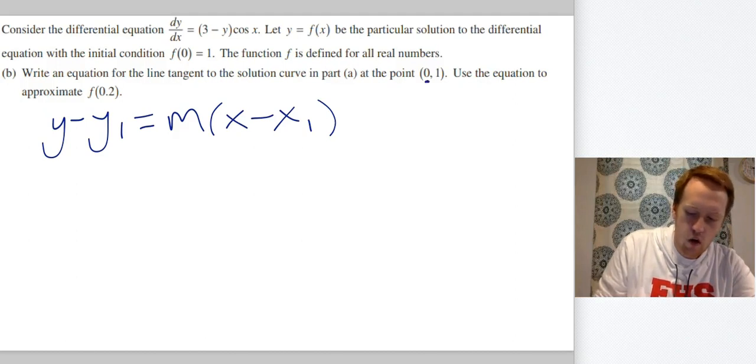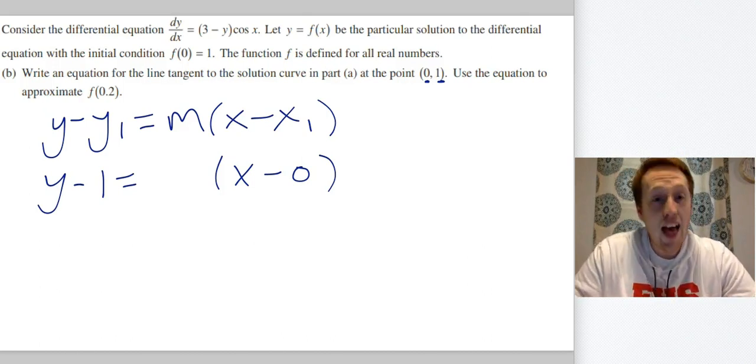x1 is zero. Y1 is one. So y - 1 equals, we'll leave that blank because we're going to get in a second, x - 0. Now to get m, to get the slope of the tangent line, you just plug in the ordered pair right here.